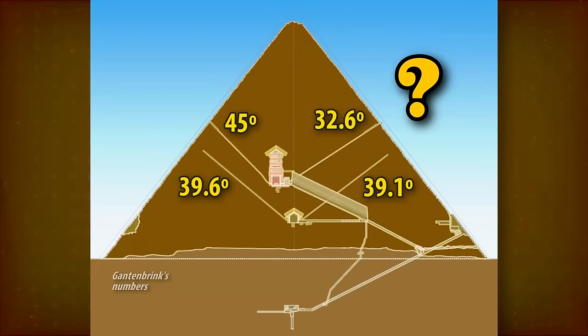The modern star shaft theory was published in the 1960s, when it was hard for non-astronomers to check such claims. Today, it can be done with popular software. Note, we're only dealing with the star shafts within the conventional dating here. Not the Orion vs Giza Plateau theory, nor attempts to date the pyramids to much earlier times.